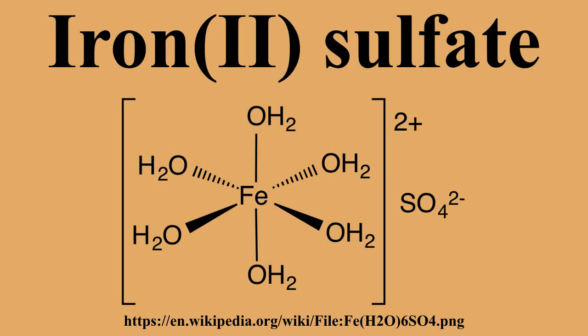Upon dissolving in water, ferrous sulfates form the metal aqua complex Fe²⁺, which is an almost colorless, paramagnetic ion. On heating, iron sulfate first loses its water of crystallization and the original green crystals are converted into a brown-colored anhydrous solid.